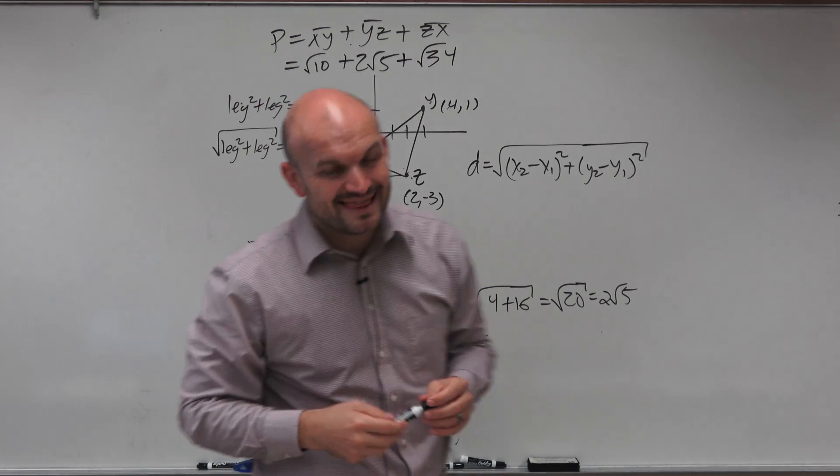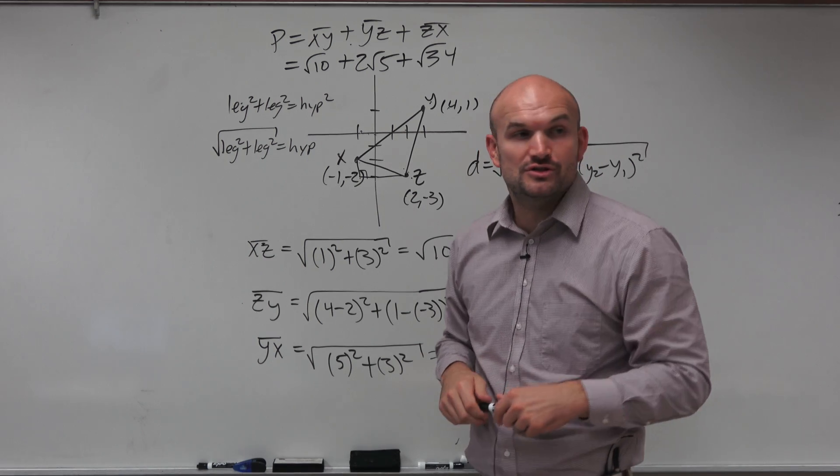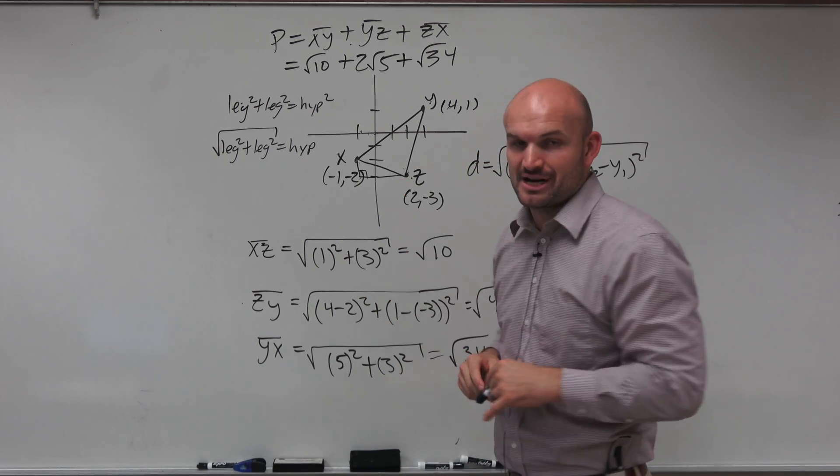OK? So there you go, ladies and gentlemen. That is how you find the perimeter of a triangle using the distance formula and Pythagorean theorem. Cheers.